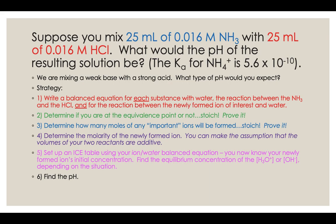We're going to go through several steps to figure out the exact pH value. Step one is writing balanced reactions: ammonia with water, the acid with water, ammonia with hydrochloric acid, and the secondary reaction of the ammonium ion with water. Then we'll do math to prove we're at the equivalence point, find moles of important ions, find the molarity of the newly formed ion, set up ice tables, and finally calculate the pH.